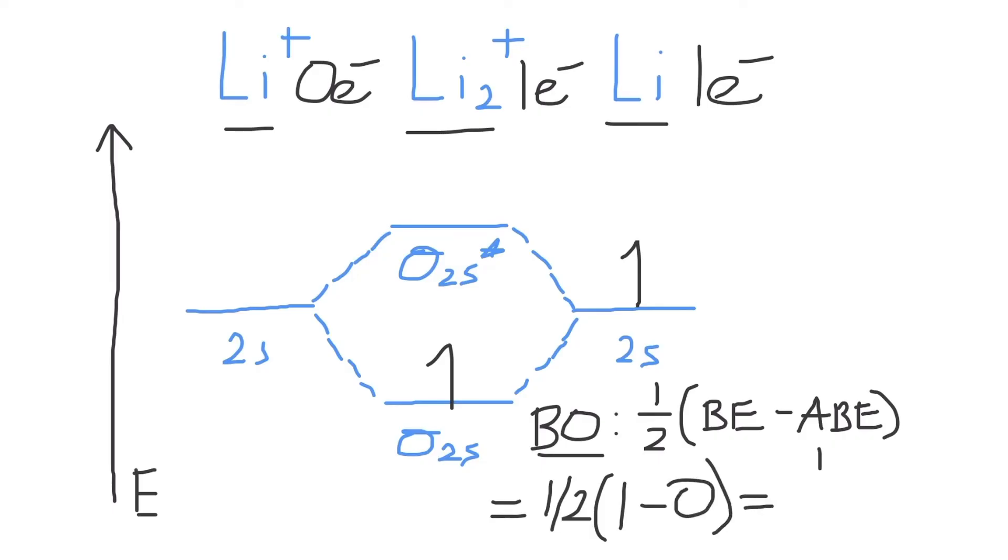One half times one is equal to one half, which means that half of an electron pair is involved in a bond between the lithium atoms in an Li2 plus molecule, which means that one electron is involved in this bond.